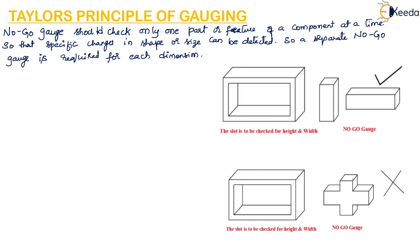In the next figure, a no-go gauge must check the dimension of the slot one at a time, and hence two separate gauges must be used. The no-go gauge is checking only the dimension of a slot at one time. There are two no-go gauges here — one and two — to check the height and the width separately.